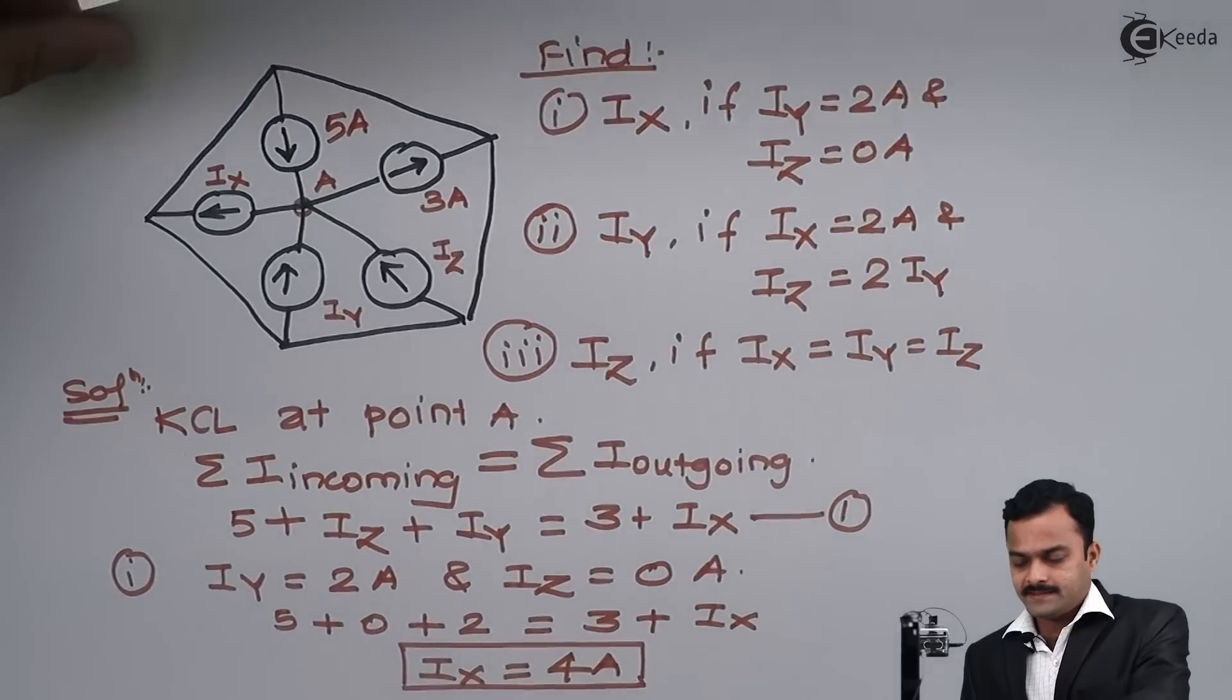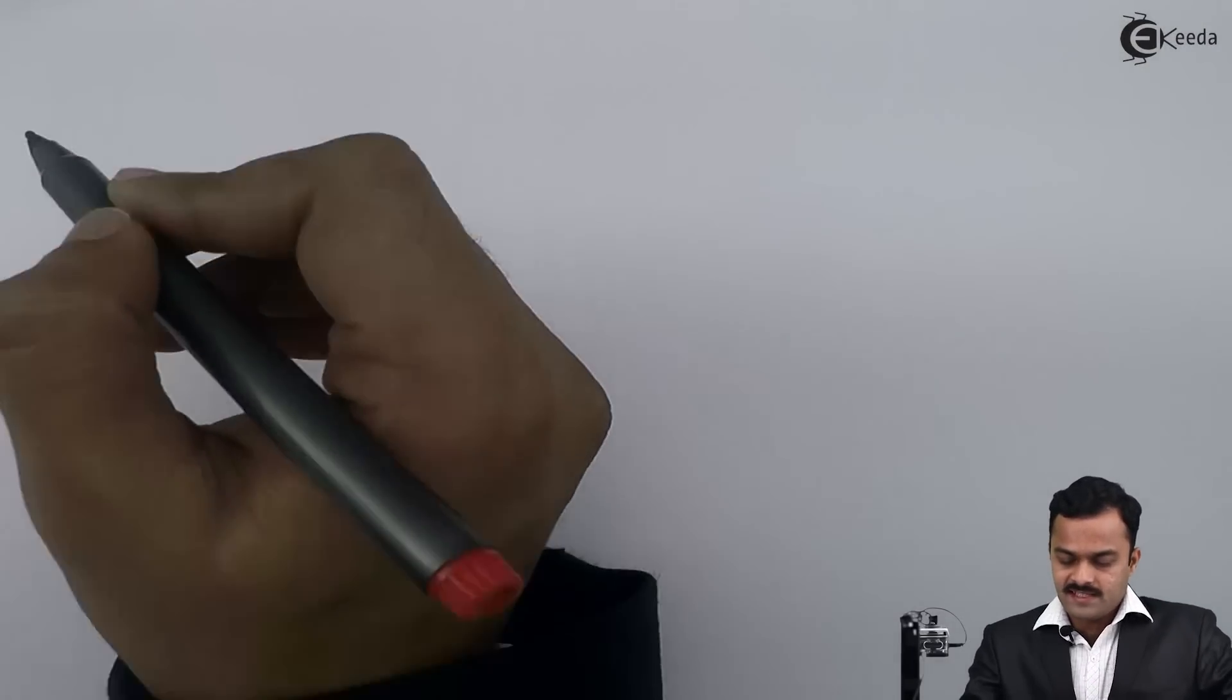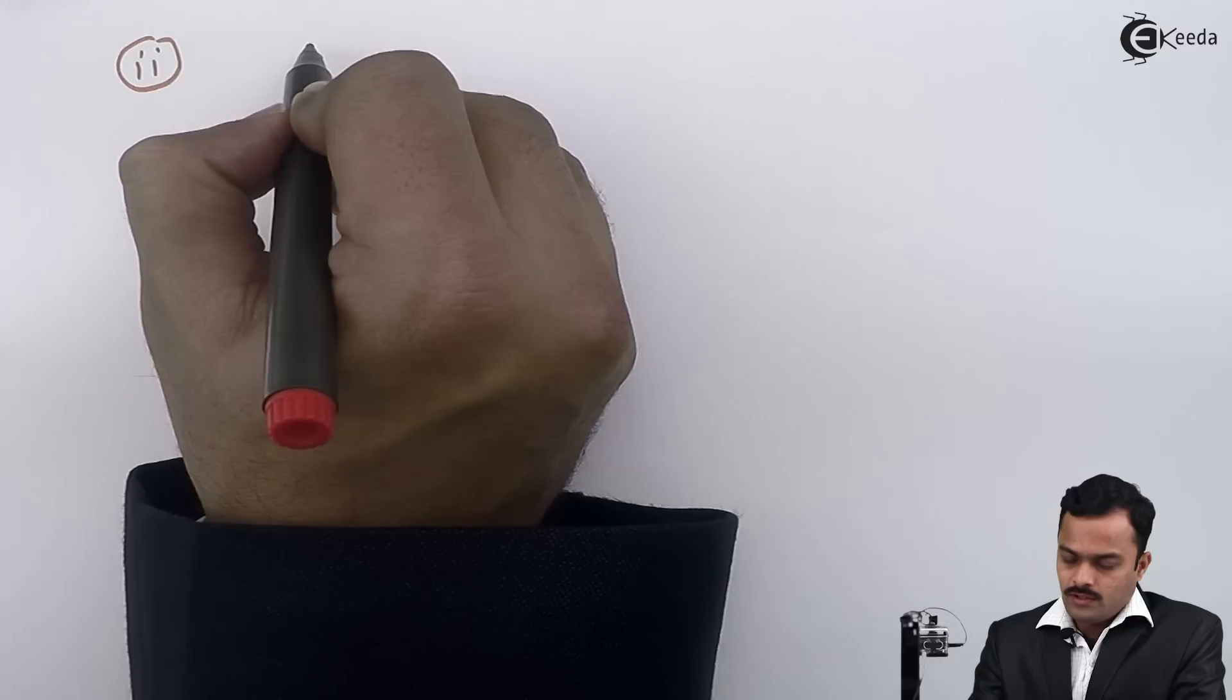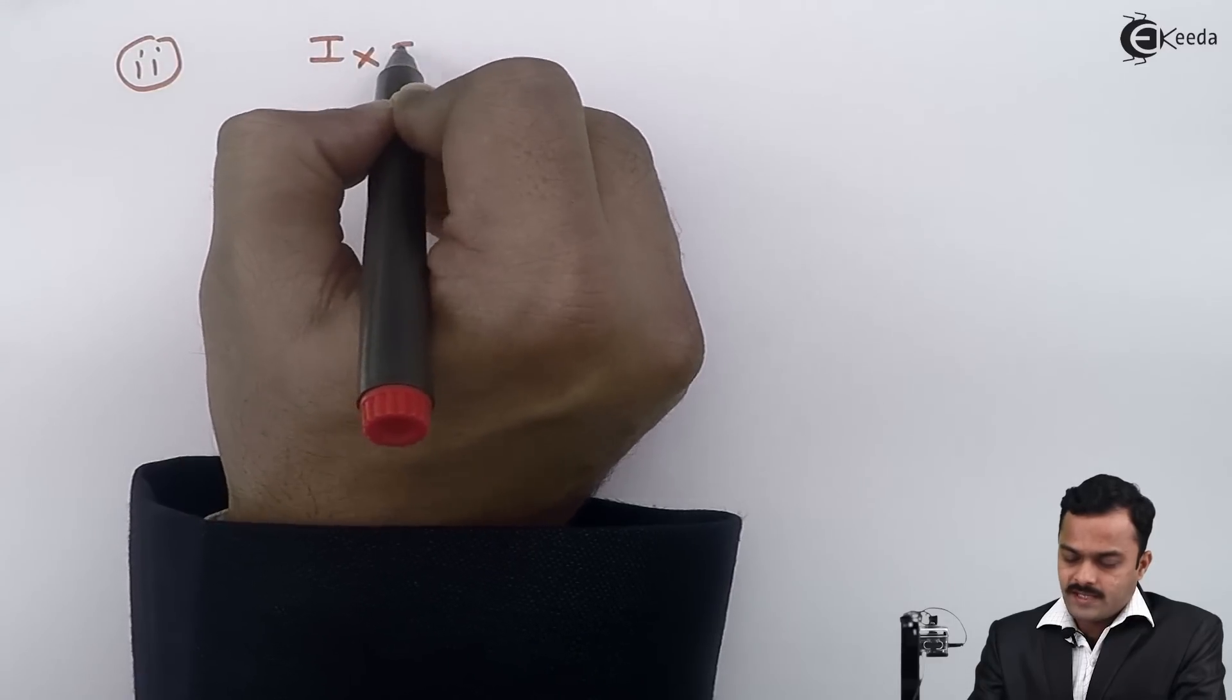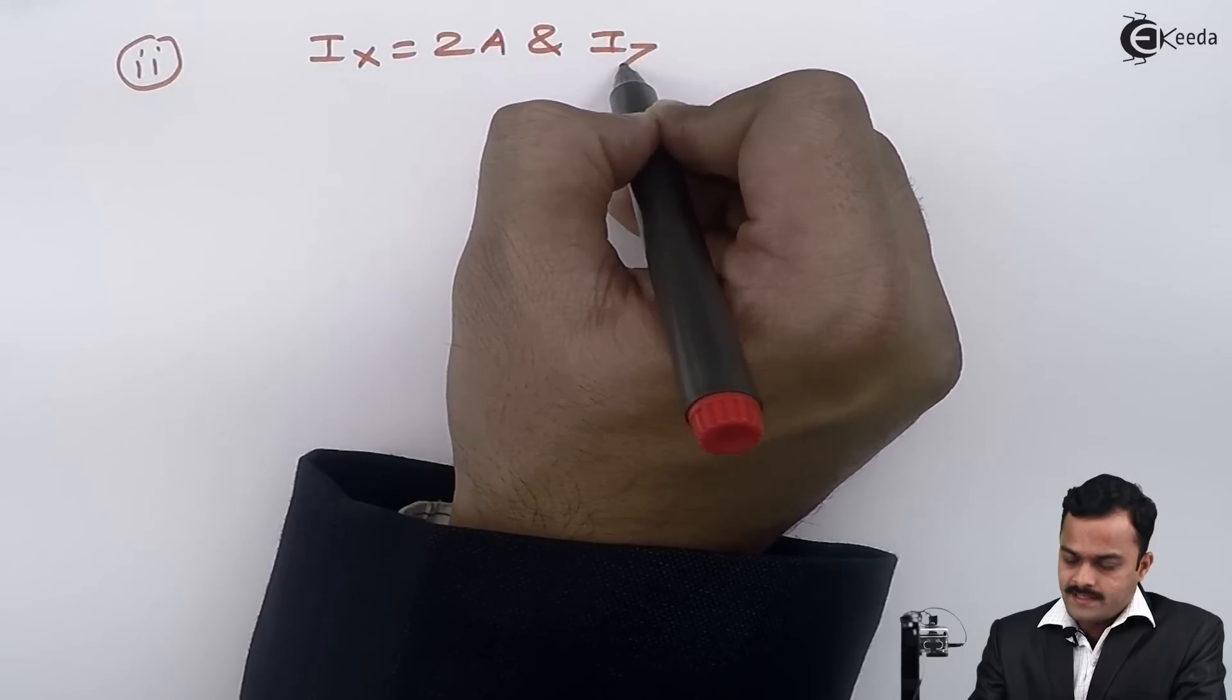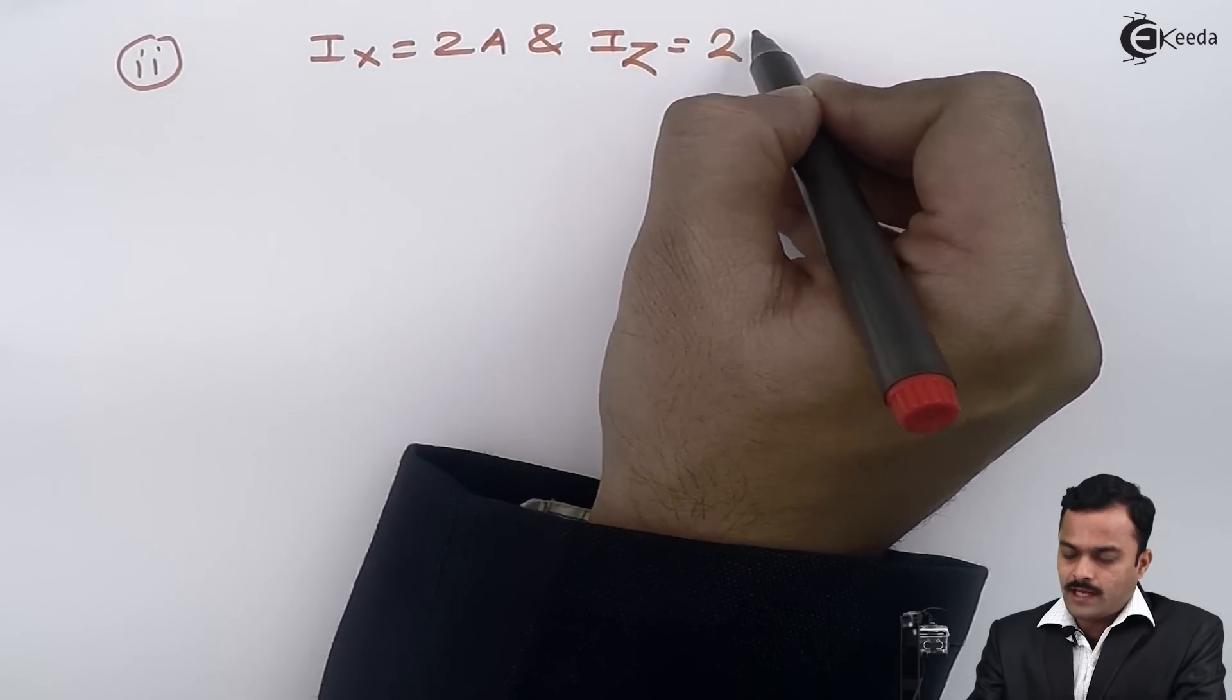Again for second case, I will consider same equation. But for second case, as we know ix is given as 2 ampere and iz is given as 2 times iy.